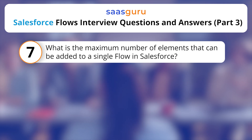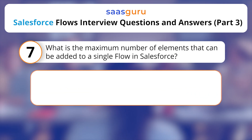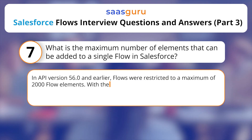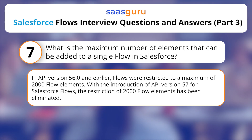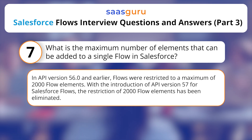What is the maximum number of elements that can be added to a single Flow in Salesforce? In API version 56.0 and earlier, Flows were restricted to a maximum of 2,000 Flow elements. With the introduction of API version 57 for Salesforce Flows, the restriction of 2,000 Flow elements has been eliminated.